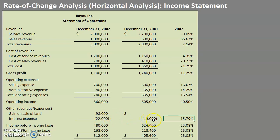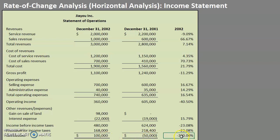In some scenarios, if something went from a positive number to a negative number, it won't read correctly for the person reading the information. For example, if we went from a net loss of $50,000 to a net income of $100,000, the formula would tell us that net income declined by 300%, which we know is incorrect. The reason for this is the interaction of negatives and positives — $100,000 minus a negative $50,000 changes the sign — so just be aware that can occur when doing a rate of change analysis.